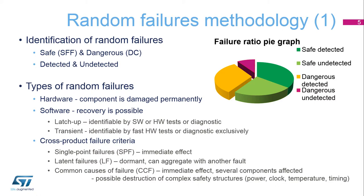Random failures can cause permanent or recoverable errors. Hard failures cause permanent physical damage to the component and the system is no longer able to operate normally. If no compensation is possible, the system has to be put into a safe state until it is repaired. Random soft latch-up and transient failures are returnable and some kind of recovery process is usually applicable. In addition to being detected, these failures can also be compensated for in certain cases. Latch-up failures can be matched by both hardware and software, while transient failures need fast hardware methods exclusively.